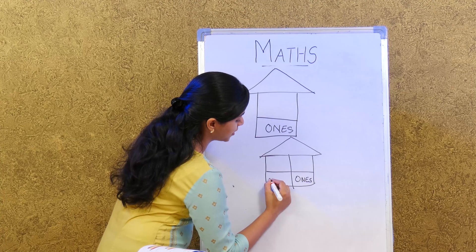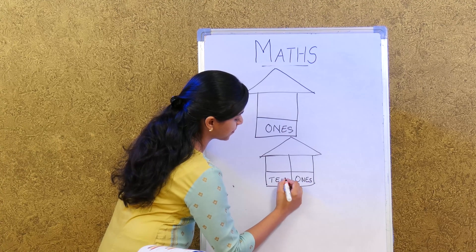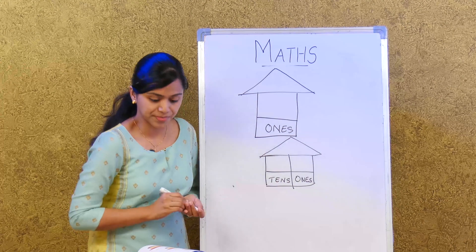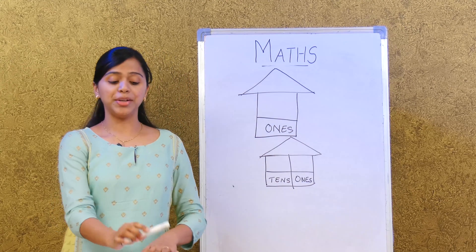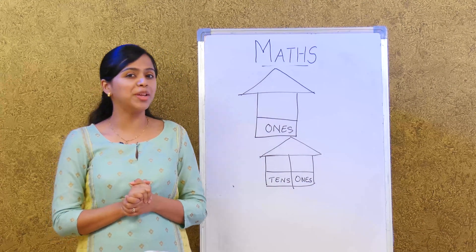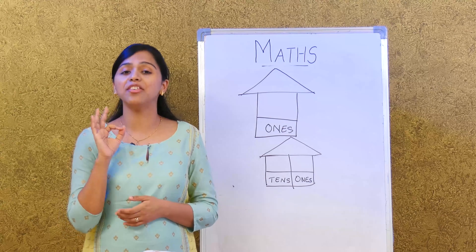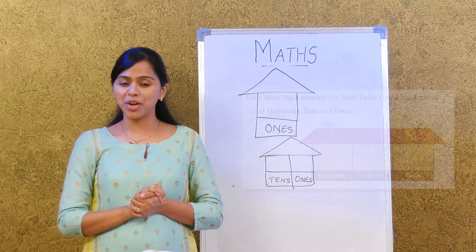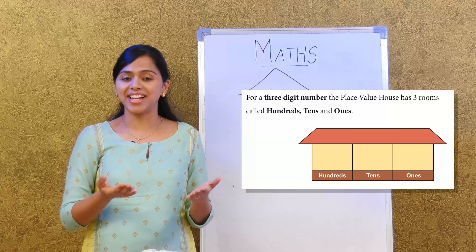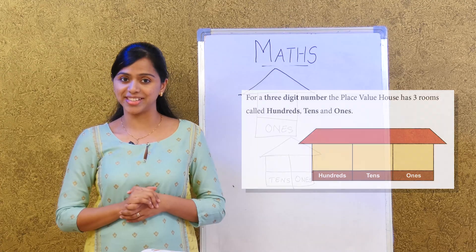For a three digit number, the place value house has three rooms: hundreds, tens, and ones. Very good, that's right.